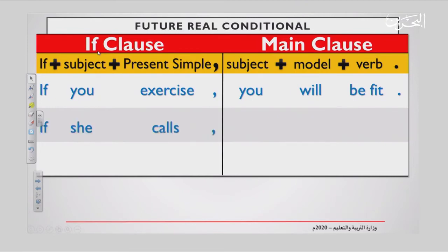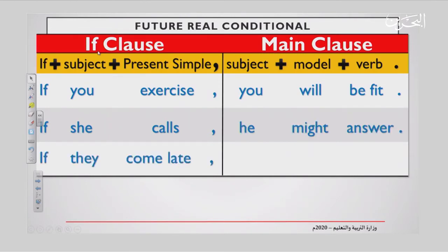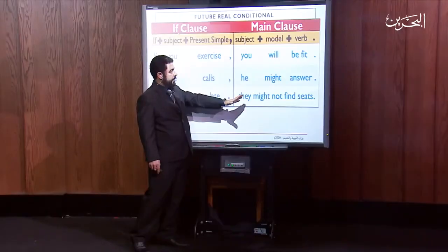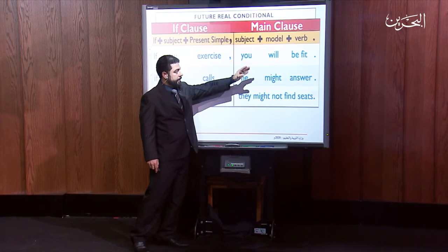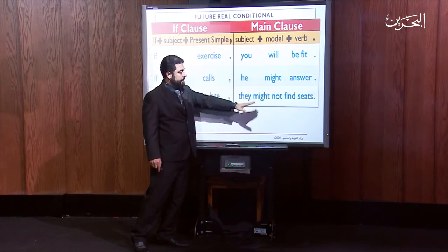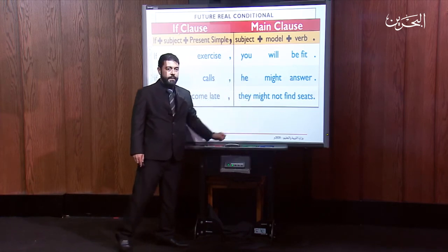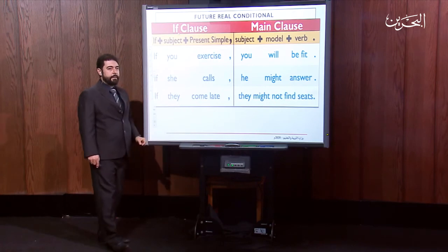Second example: 'If she calls, he might answer.' Third: 'If they come late, they might not find seats.' The subject can be you, he, or they. The modal can be 'will,' 'might,' or 'might not' — you can even use the negative form.